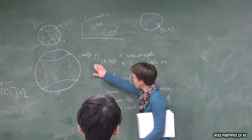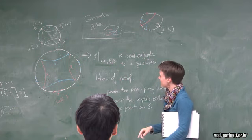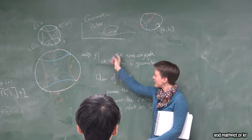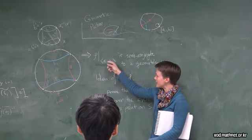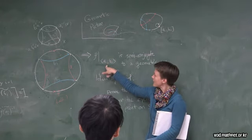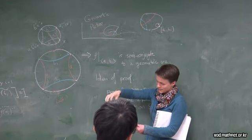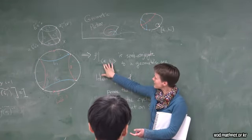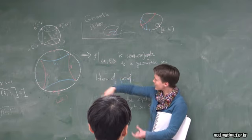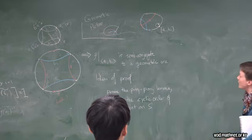I said that just the restriction of rho to these two things is semi-conjugate to a geometric picture. That semi-conjugacy might not play well with the rest of the action. If I know to collapse some intervals that are invariant under this subgroup, they're not necessarily invariant under the rest of the group. This might not give me a semi-conjugacy on the whole group.